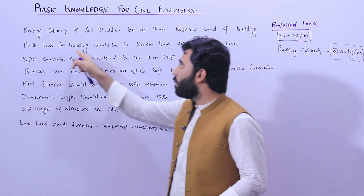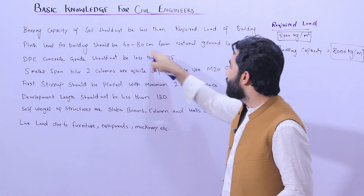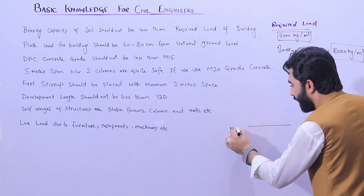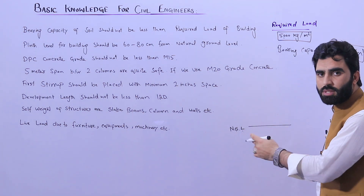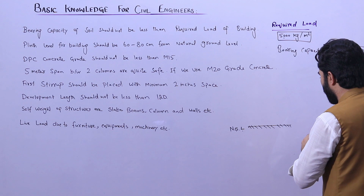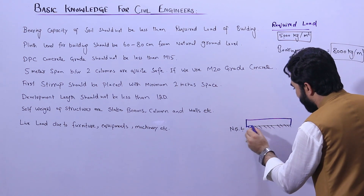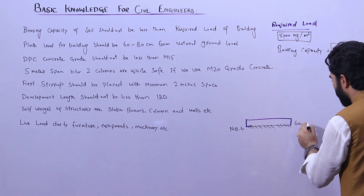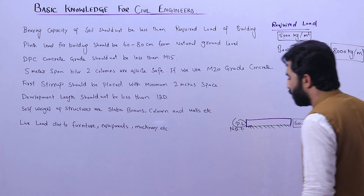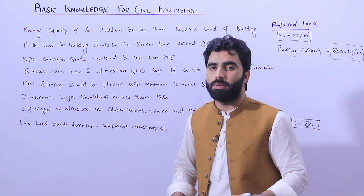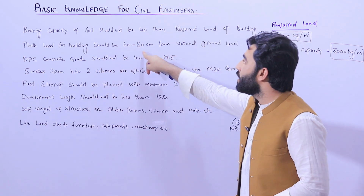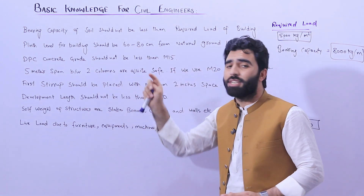The plinth level for the building should be 60 to 80 centimeters from the natural ground level. The natural ground level is the natural surface level of the soil. When you want to construct your building, the plinth level — PL — should be a minimum of 60 to 80 centimeters above the ground level. It should not be equal to the ground level, otherwise you will face problems in the future, whether it is a commercial or residential building. You can increase it, but it should not be less than this.